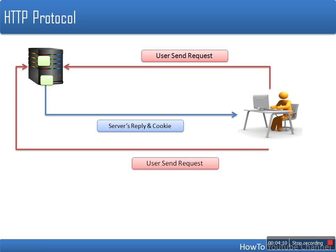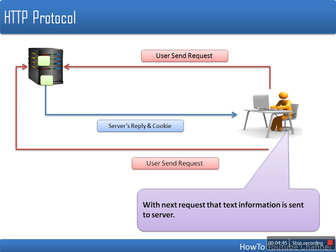When the server receives this cookie, it will match it with its existing stored cookie. If these two pieces of information match, the server will conclude that this cookie is coming from a client that has previously interacted with this server. So the server will conclude that this is not a new client. This is the way cookies help to identify whether the server is receiving a request from the same client or from a different client.